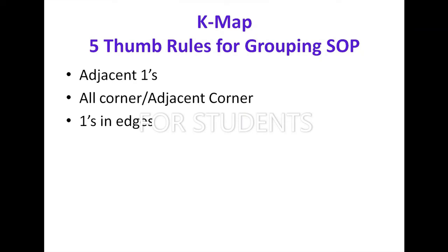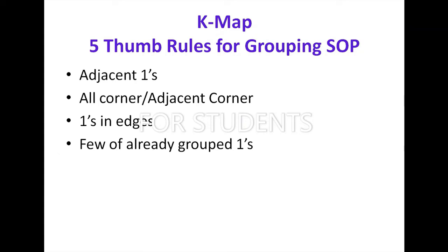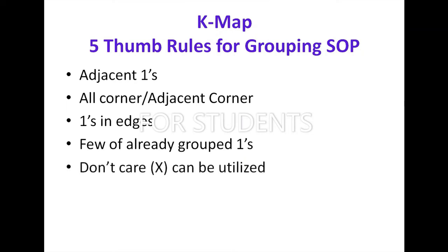The third rule is ones at the edges — this is a very important rule. Most students miss these edge ones. Whenever ones are available at the edges, we have to look at the opposite edge. We can also utilize already grouped ones — not all of them, just a few — if it helps to form a maximal grouping.